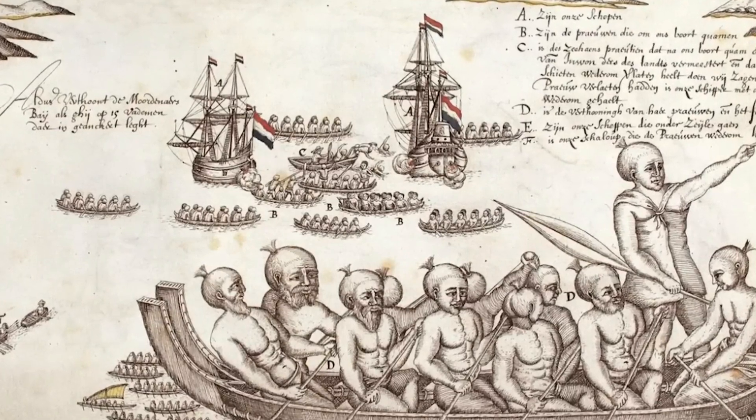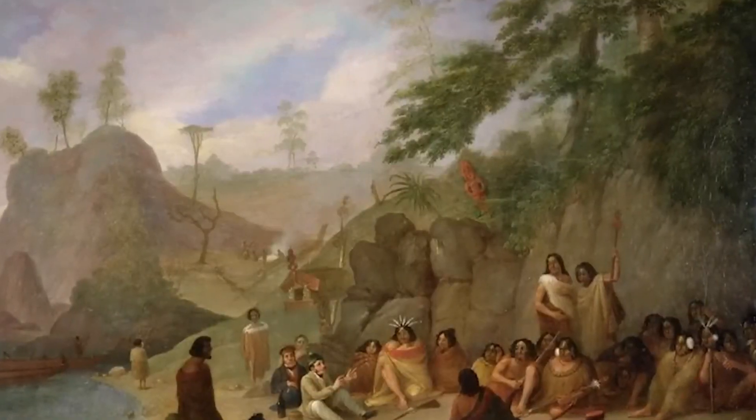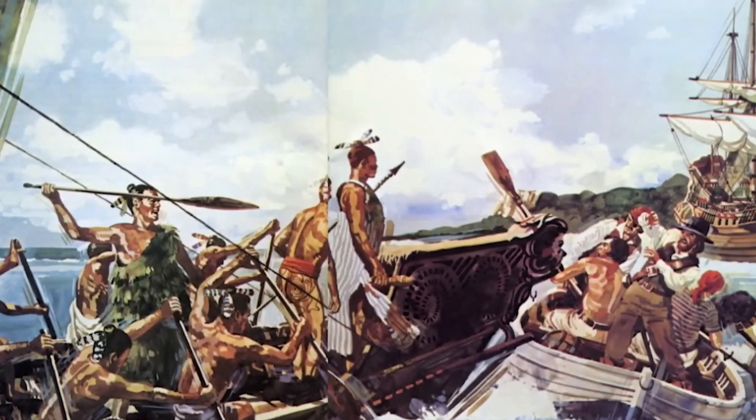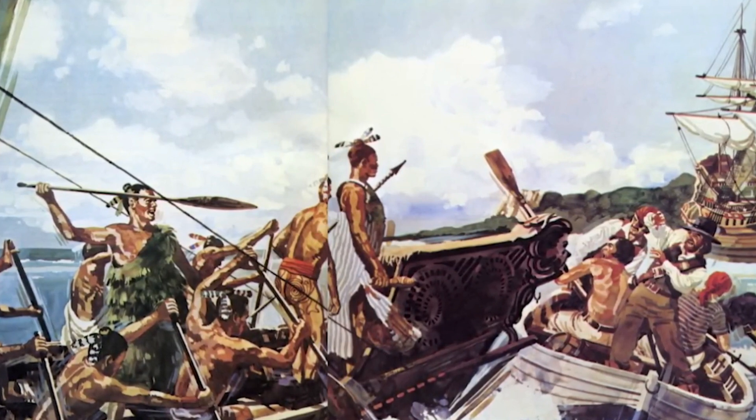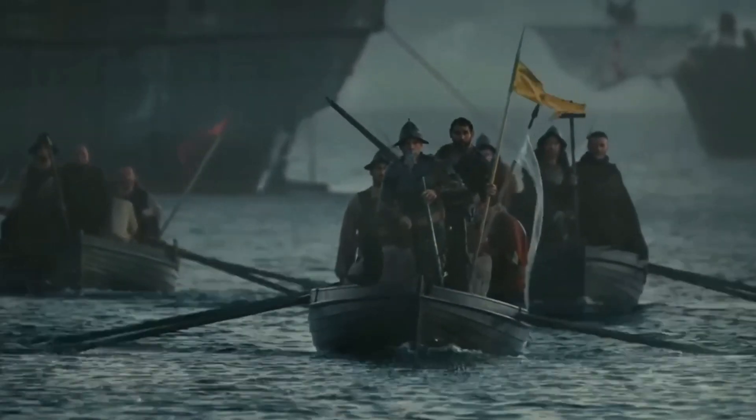When he first encountered the Maori people, who are thought to have arrived in the region hundreds of years earlier, it was not a good beginning for him. On day two, some of them got into a canoe and rammed a small boat carrying messages between the Dutch ships. Four Europeans were killed in the incident.